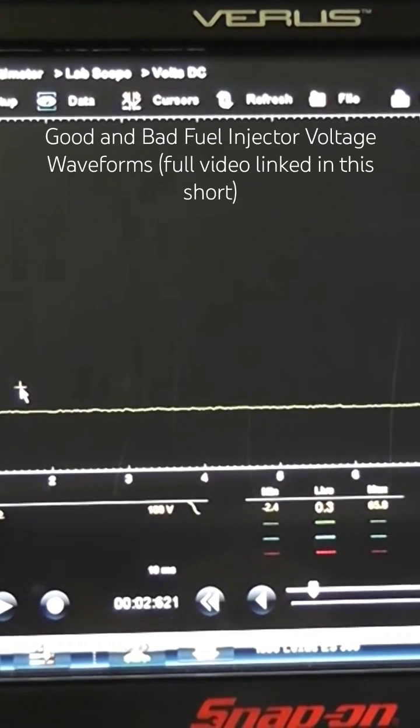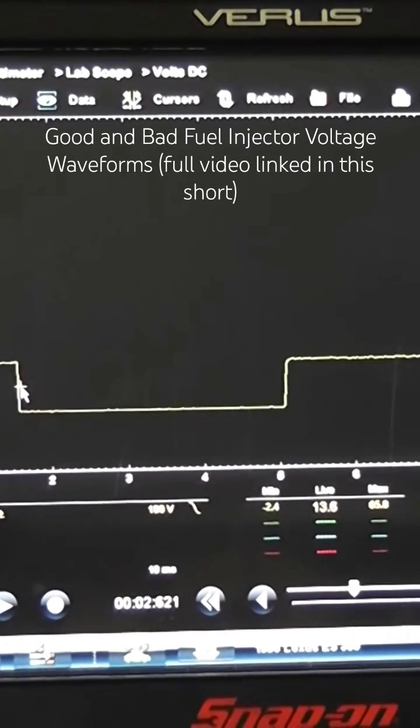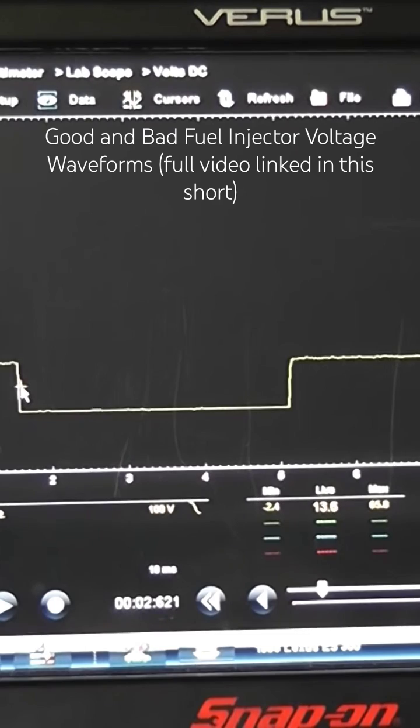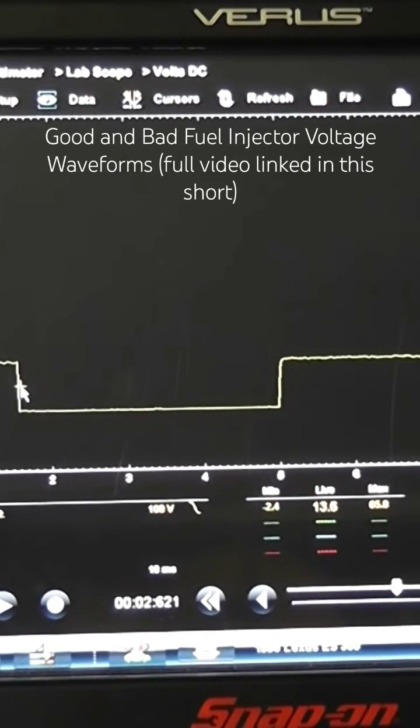I'll go back to number six to show you guys what's missing here. There's no spike in this. When we don't see a spike on a fuel injector, that suggests we have a weak magnetic field.